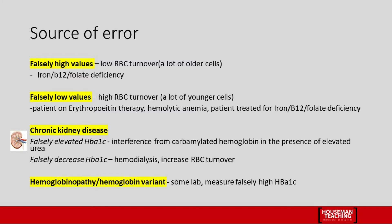Chronic kidney disease patients can have both falsely high and falsely low HbA1c. High urea can cause a falsely high HbA1c due to interference from carbamylated hemoglobin. Chronic kidney disease can also cause a falsely low HbA1c in patients undergoing hemodialysis and those on erythropoietin therapy. Hemoglobinopathy or hemoglobin variants such as thalassemia can also cause false HbA1c results in some labs.